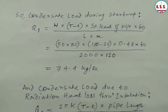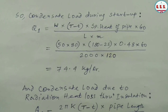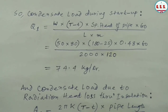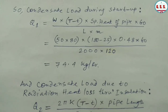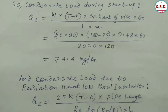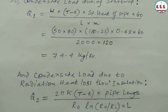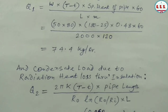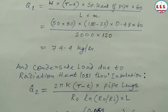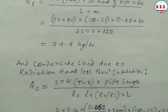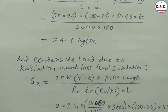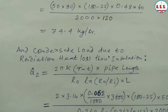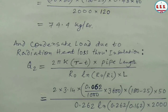Condensate load during startup: Q1 = (W × (T − t) × specific heat × 60) / (L × M) = (50 × 80 × (180 − 25) × 0.48 × 60) / (2000 × 120) = 74.4 kg/hr.